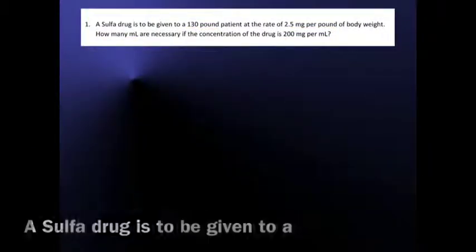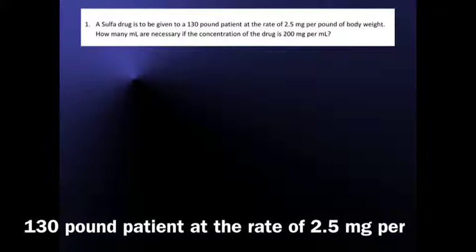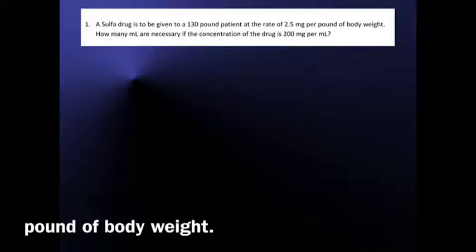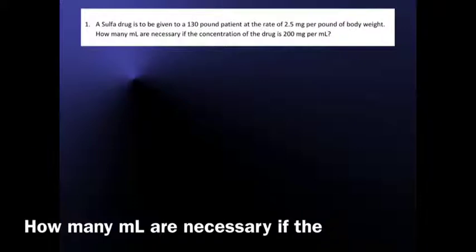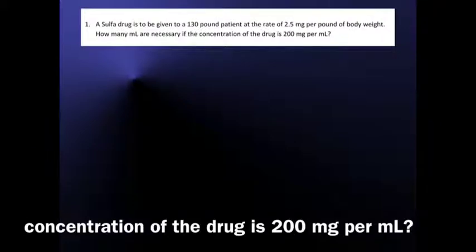A sulfa drug is to be given to a 130 pound patient at the rate of 2.5 mg per pound of body weight. How many milliliters are necessary if the concentration of the drug is 200 mg per milliliter?